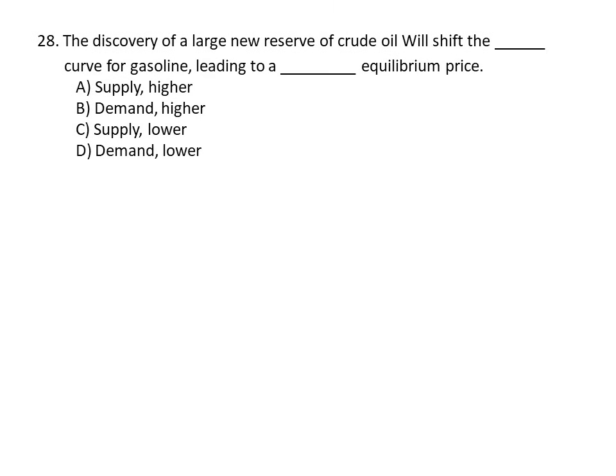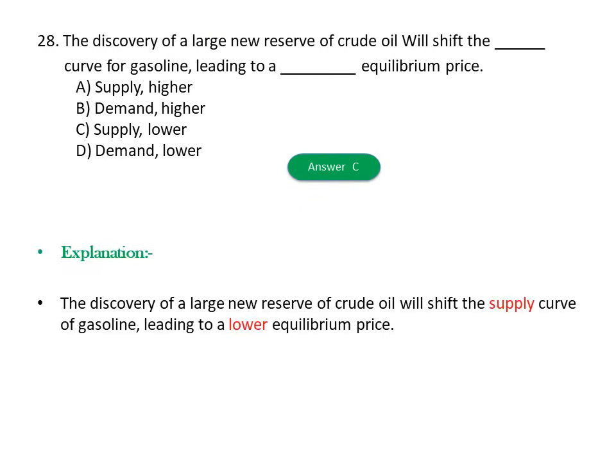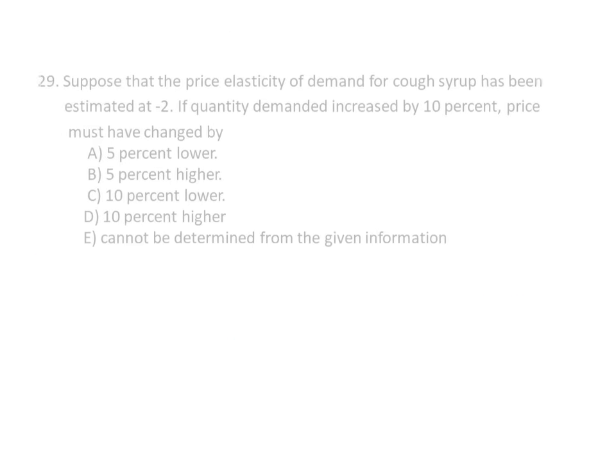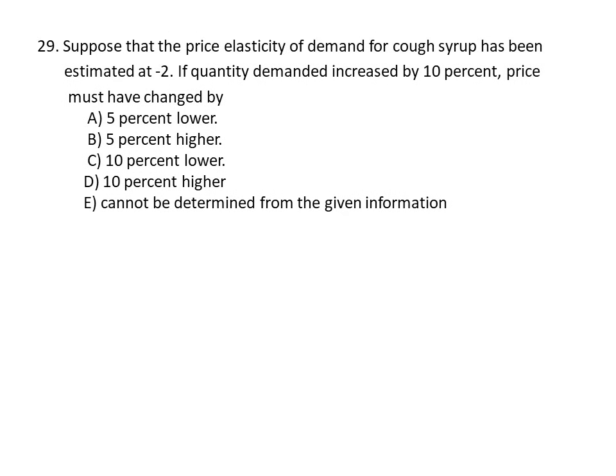Question twenty-eight: The discovery of large reserves of crude oil will shift the supply curve of gasoline and lead to a lower equilibrium price. Options: A) Supply and higher, B) Demand and higher, C) Supply and lower, D) Demand and lower. The answer is C, supply and lower — the discovery of large reserves shifts the supply curve of gasoline rightward, leading to a lower equilibrium price.